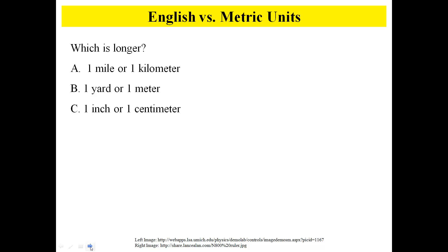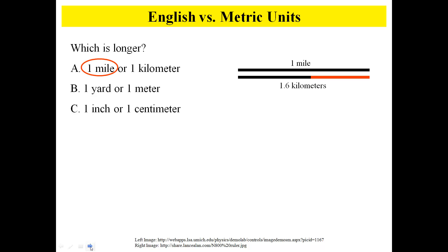Let's take a look at English versus metric units. Which is longer, a mile or a kilometer? A mile is actually much longer than a kilometer. If you watch the Olympics, they run the 5,000 meters or 5 kilometers, the 10,000 meters or 10 kilometers. Here in Grand Rapids we have the 3rd Street Riverbank Run, which is a 25k or 25 kilometers.